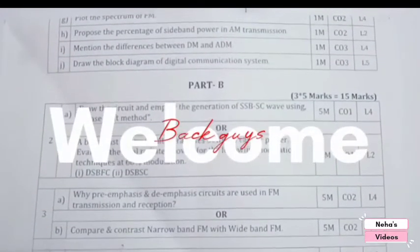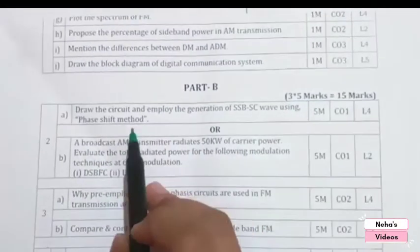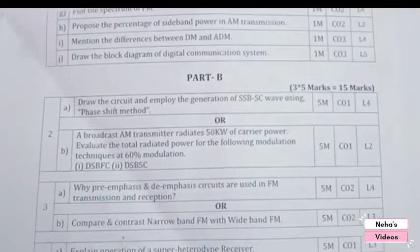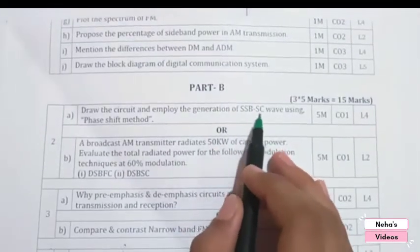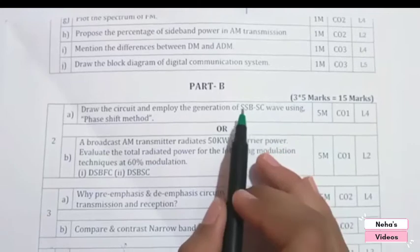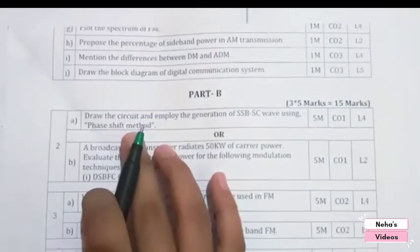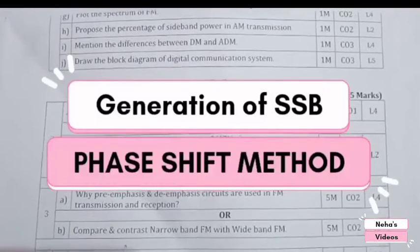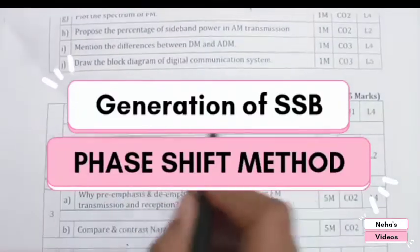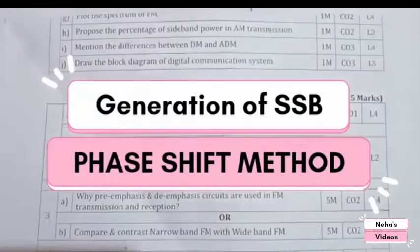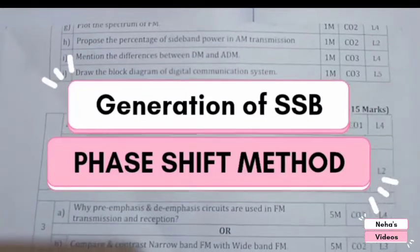Welcome back to the channel. In this video I'm going to discuss the part B question. The question says to draw the circuit diagram and explain the generation of SSB-SC (Single Sideband Suppressed Carrier) wave using the phase shift method — that means using the phase description method for generating the SSB-SC signal.